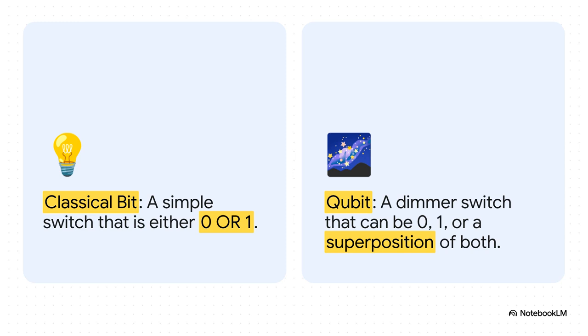Okay, this is the core difference right here. A classical bit, the thing that runs everything from your watch to a supercomputer, it's basically a light switch. It's either off, a zero, or it's on, a one. That's it. A qubit, on the other hand, is more like a dimmer switch. Yeah, it can be zero or one, but it can also be a blend of both states at the exact same time. It's this wild ability to exist in this whole spectrum of states that just unlocks an exponentially bigger playground for doing calculations.